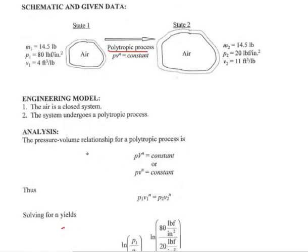The pressure-volume relationship for a polytropic process is P times V to the power n equals constant, or for specific volume, P times v to the power n equals constant.